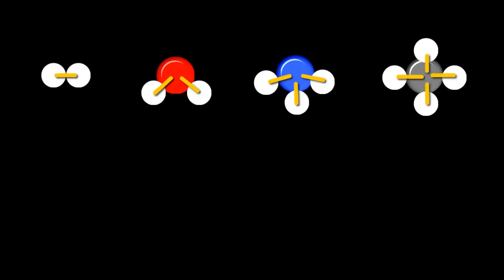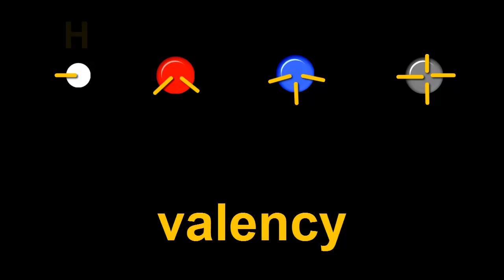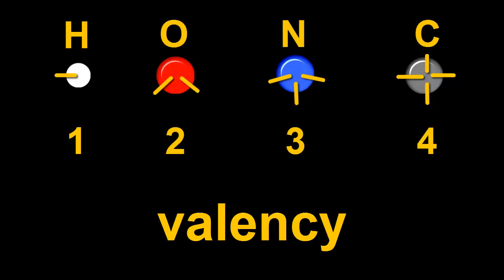To summarize, we saw that hydrogen atoms can make only one bond, oxygen atoms can make two bonds, nitrogen three, and carbon four bonds with other atoms. This number of bonds that an atom can make is called its valency. Hydrogen has a valency of one, oxygen two, nitrogen three, and carbon four. We'll look at the valencies of other types of atoms later.